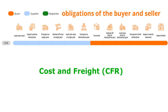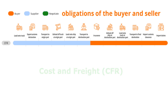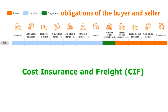The third one is CFR, Cost and Freight. With CFR, the seller arranges the transport of goods to the named port. The seller delivers goods, cleared for export, loaded on board the vessel. The risks are then transferred to the buyer once the goods are loaded on board. The fourth one is CIF, Cost Insurance and Freight. This incoterm is the same as CFR, just with the added responsibility that the seller also pays for the insurance.